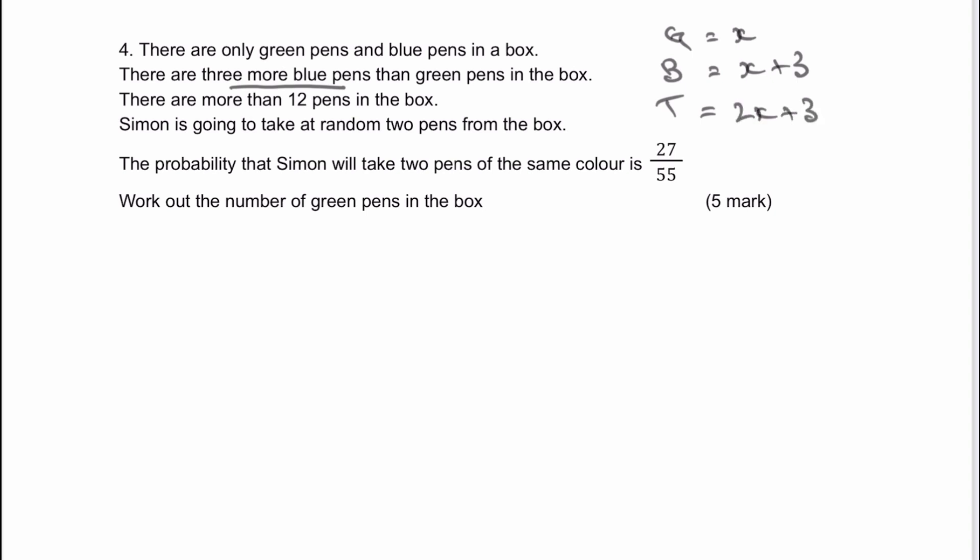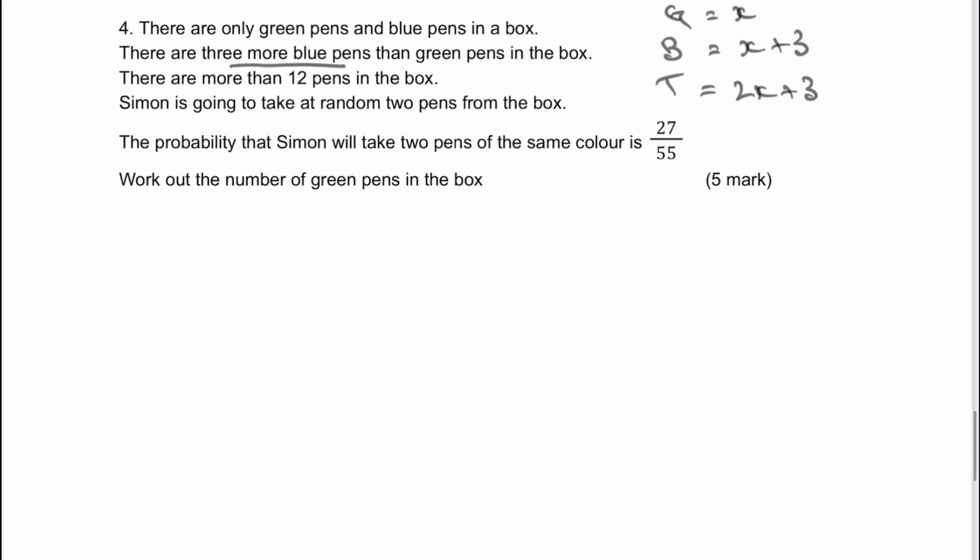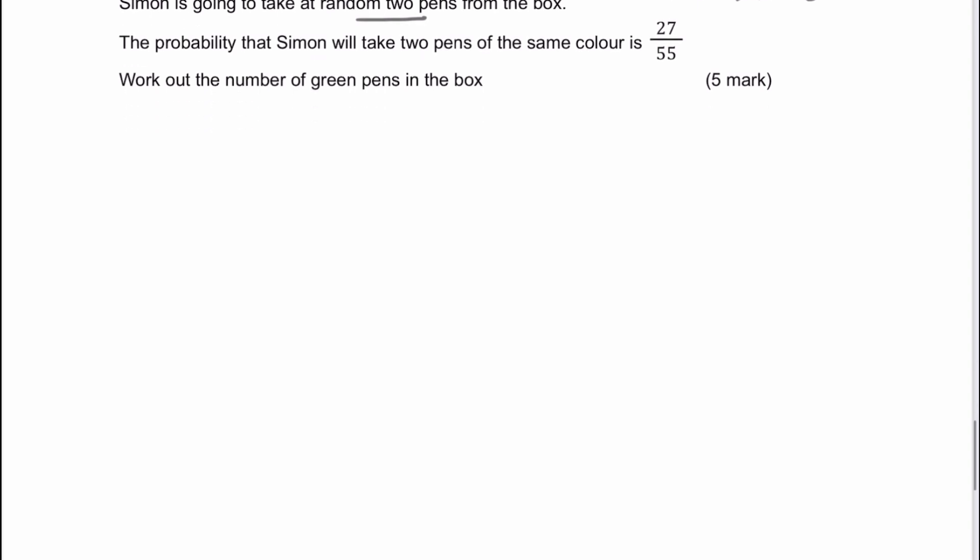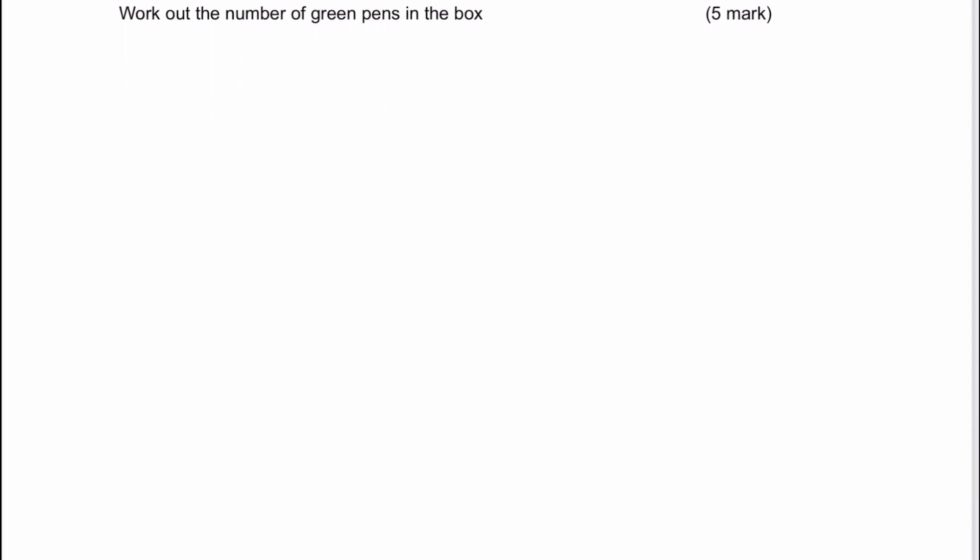What it allows us to do is to draw a probability diagram showing what's going on with this particular probability. So I'm going to take at random two pens from the box. Let's have a go at writing out a diagram. We've got green and blue. The number of green pens is x out of 2x plus 3, and the number of blue pens is x plus 3, also out of 2x plus 3.